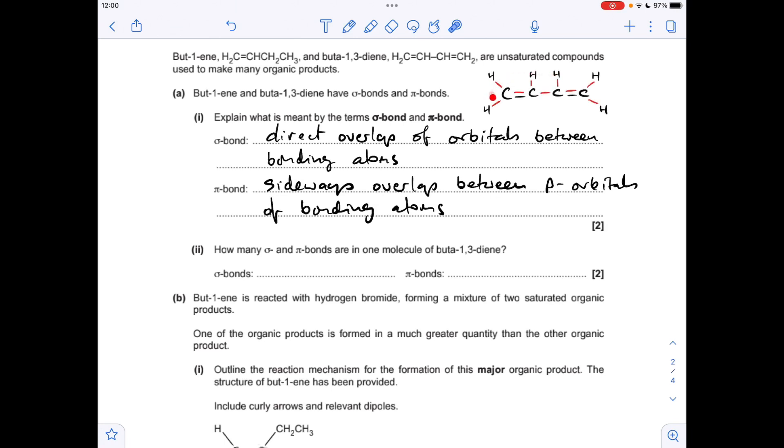To help with the next part, I've drawn up a displayed formula for buta-1,3-diene. The sigma bonds are all in red and the pi bonds are in black. So we've got nine sigma bonds and two pi bonds.